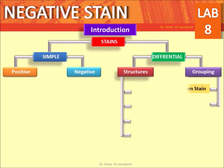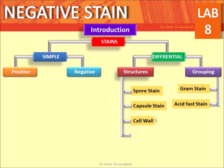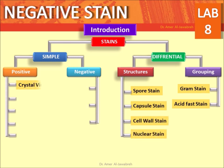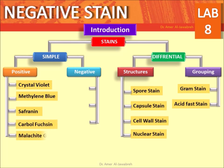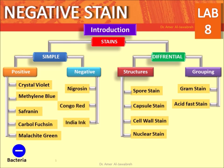Differential stains for grouping bacteria include Gram stain, acid-fast stain, spore stain, capsule stain, silver stain, and nuclear stain. Positive stains include crystal violet, methylene blue, safranine, carbol fuchsin, and malachite green. Negative stains include nigrosine, Congo red, and India ink.